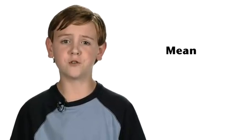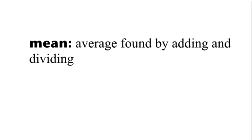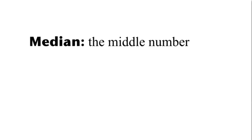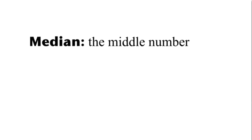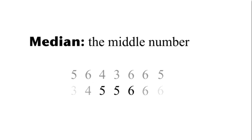Thank you for that nice introduction. Sometimes math can be mean. Our first vocab word today is mean. The mean value of a set of numbers is the average. Add the values together and divide by the amount of numbers to find the mean. Median means middle. Put the numbers in order from least to greatest and find the middle number to find the median.